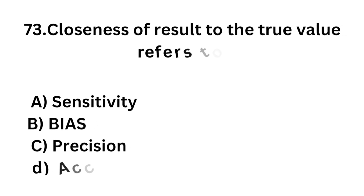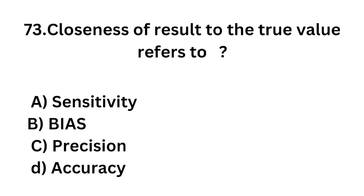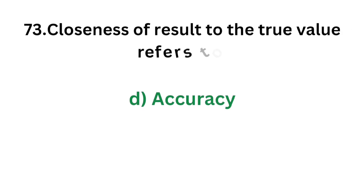Question number 73. Closeness of a result to the true value is referred to as: Option A - Sensitivity; Option B - Bias; Option C - Precision; Option D - Accuracy. The correct answer is Option D, Accuracy. Closeness of a result to the true value is referred to as accuracy, where sensitivity is true positivity, bias is the error, and precision is the reproducibility of the result.